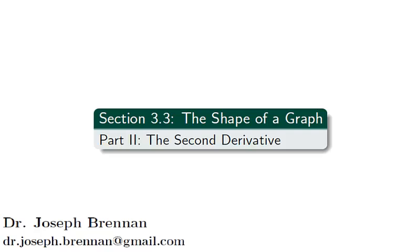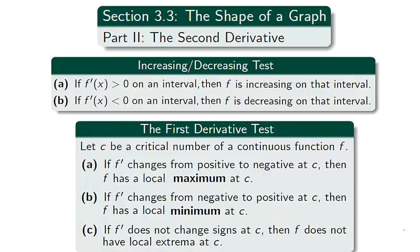Hello and welcome to the second video of section 3.3 on how the second derivative affects the shape of the graph. In the previous video, we used the first derivative to locate and identify local extrema using the first derivative test, and we used the increasing-decreasing test to find intervals on which the function was increasing or decreasing. In this second video, we are interested in what the second derivative f'' can tell us about the function f.